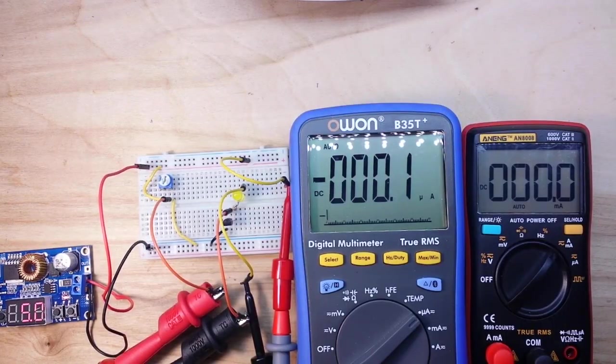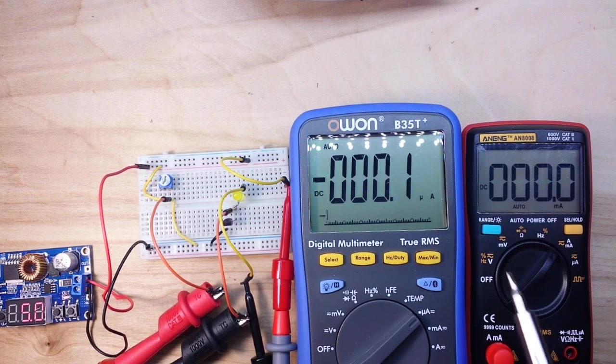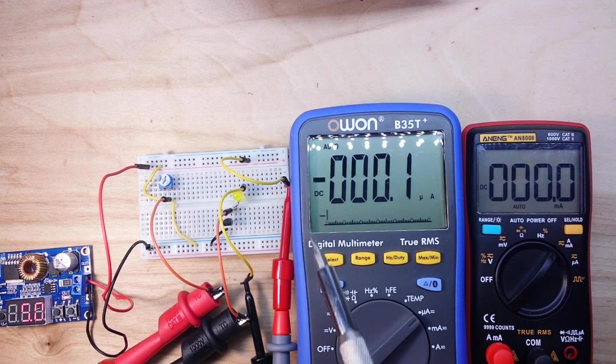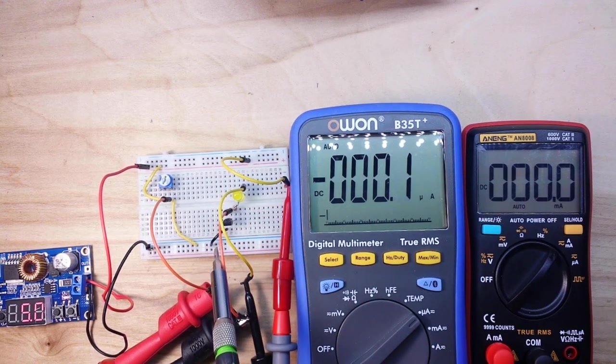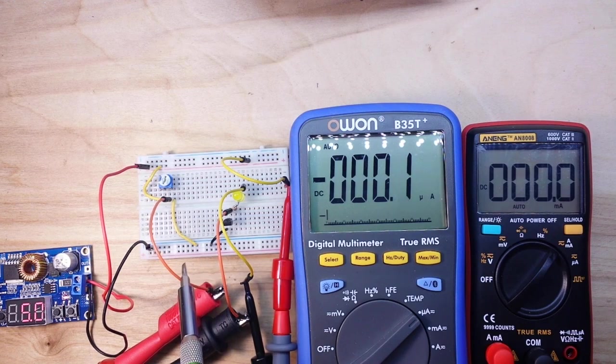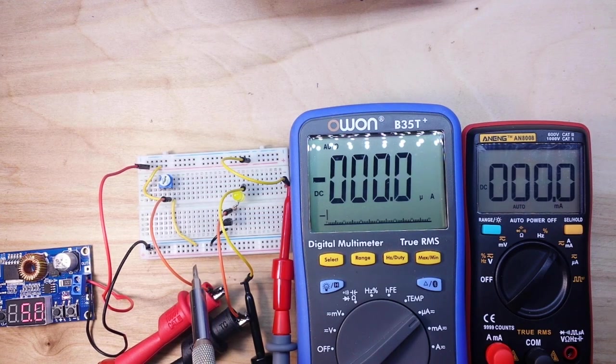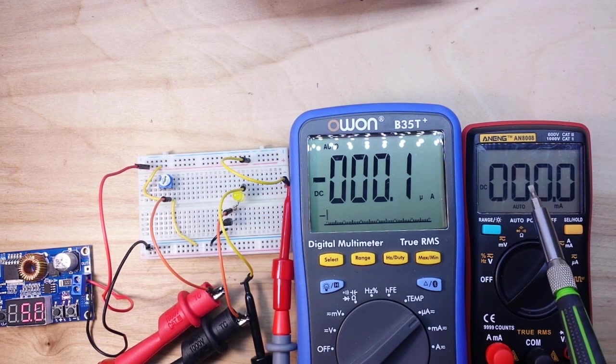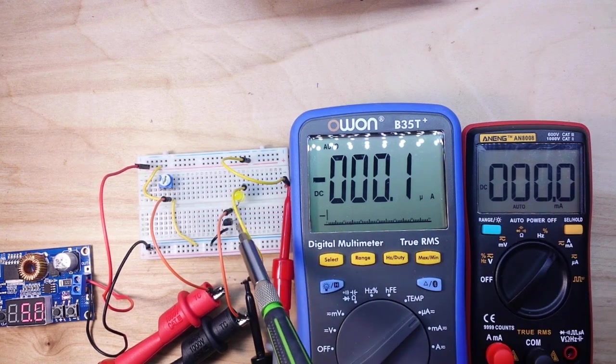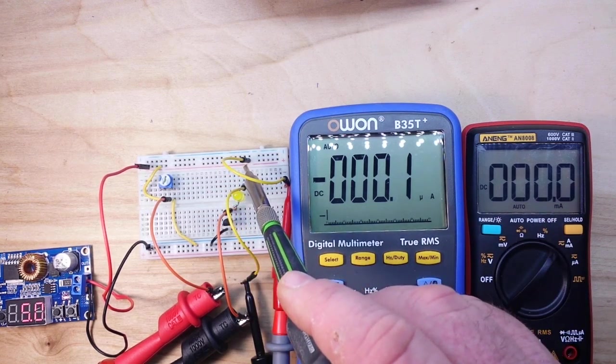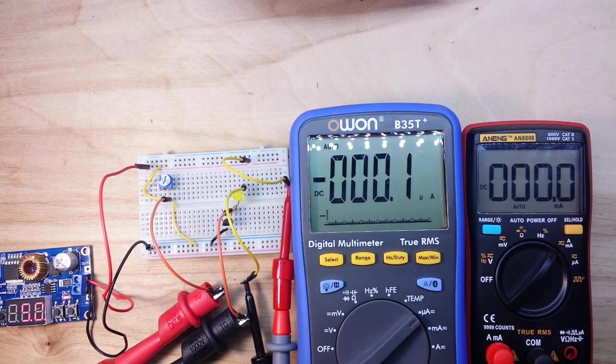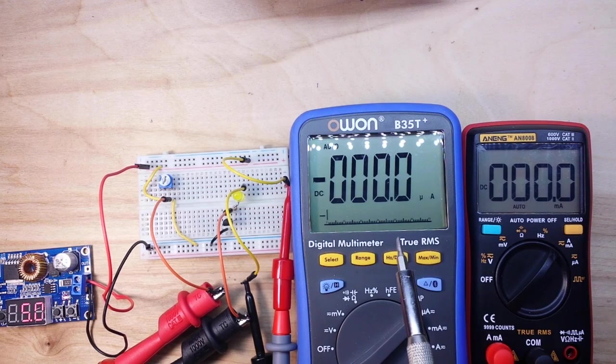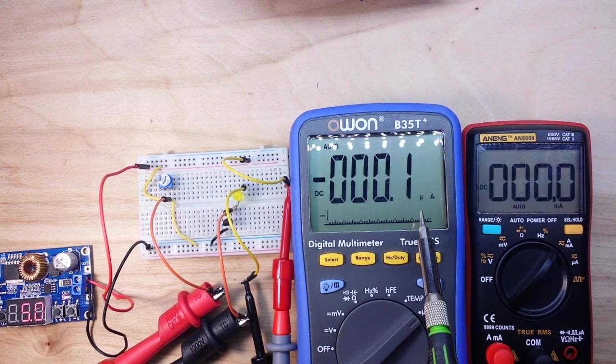Okay, I've brought in two meters. The 01 is hooked up here in line with the base of the transistor, and the 8008 is hooked up in line from the plus 5 volts to the anode of the LED. So they are both measuring current.